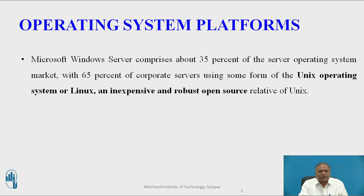Now we will look at the first element: the operating system platform. Microsoft Windows Server comprises about 35% of the server operating system market, with 65% of corporate servers using some form of Unix, or Linux — an inexpensive and robust open-source relative of Unix. Microsoft Windows Server is capable of providing enterprise-wide operating system and network services. Unix and Linux are scalable, reliable, and much less expensive than mainframe operating systems.